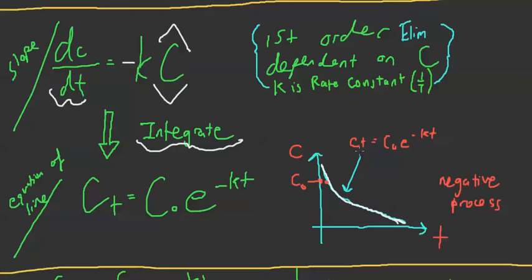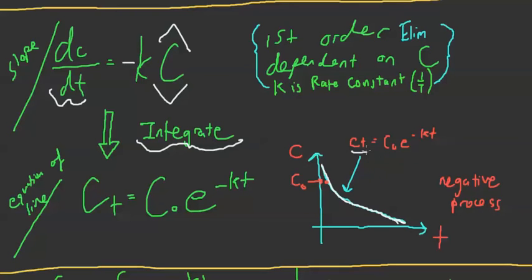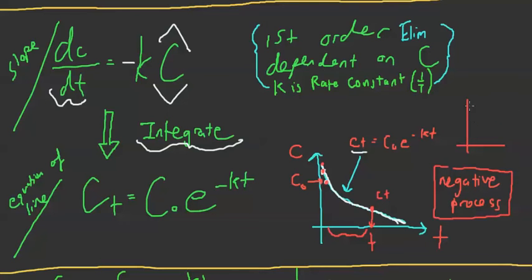Let's look at this graph. This equation describes CT — your concentration after some time. We start at C0, and C0 can be anywhere on the graph. CT is what we get after some time has elapsed. We have to note that elimination is a negative process — it's not positive, it goes down. So the equation CT = C0 · e^(−KT) describes this decreasing curve.